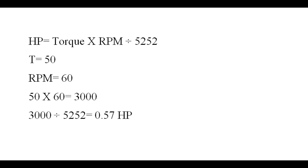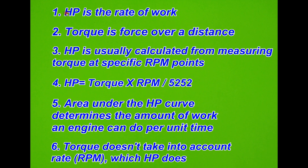Humans can develop between about 1 and 2 horsepower for very short periods of time, so yes this is possible — but you couldn't do it for very long. Clearly humans are no match for horses or steam engines. Horsepower is the rate of work. Torque is force over a distance. Horsepower is usually calculated from measuring torque at specific RPM points on a dynamometer, and again: horsepower equals torque times RPM divided by 5252.